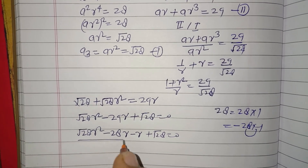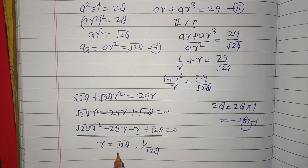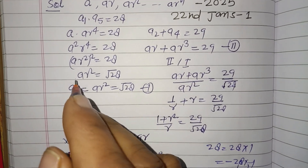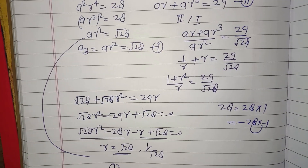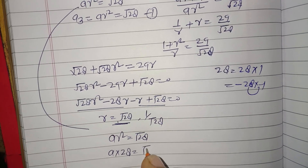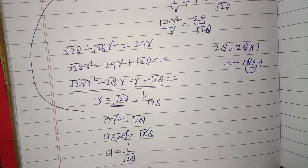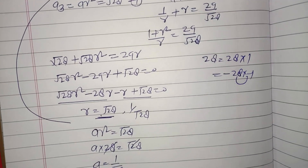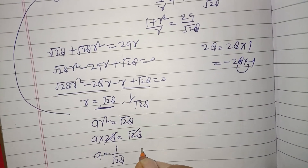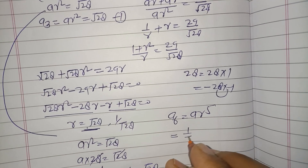From the quadratic, we get r = √28 or r = 1/√28. Using ar² = √28 and r = 1/√28: a × (1/√28)² = √28, so a × (1/28) = √28, giving a = √28 × 28 = 28√28. Wait — taking r = 1/√28, we get a = 28√28, or equivalently a = 1/√28 when r = √28.